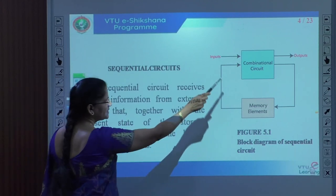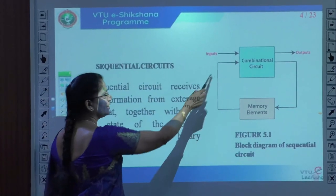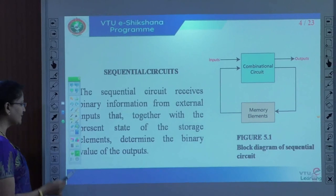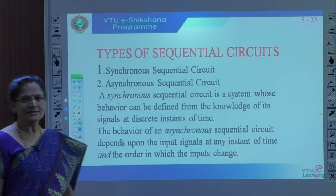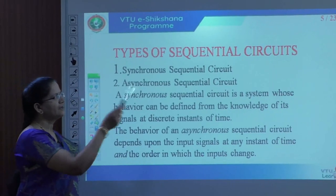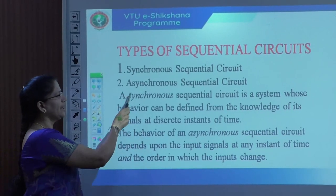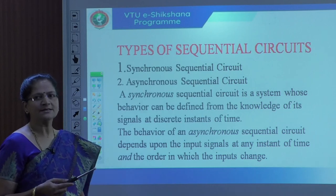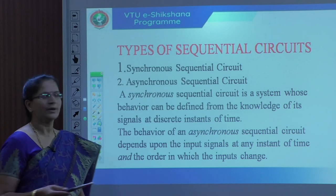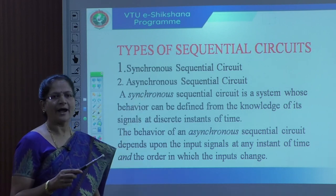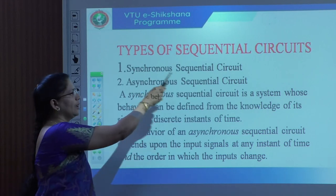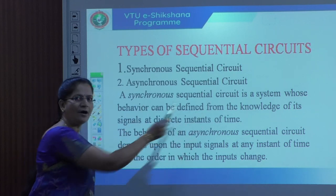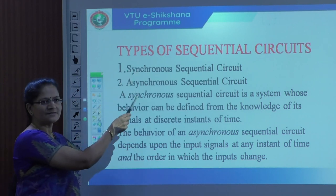The block diagram shows that whatever it takes as a present state will be given as input, and whatever output it produces will be called the next state. There are two different types of sequential circuit: one is called synchronous sequential circuit, another one is called asynchronous sequential circuit. In a synchronous sequential circuit, when clocks are applied to all the flip-flops simultaneously, it changes the behavior of the signal at discrete instants of time.